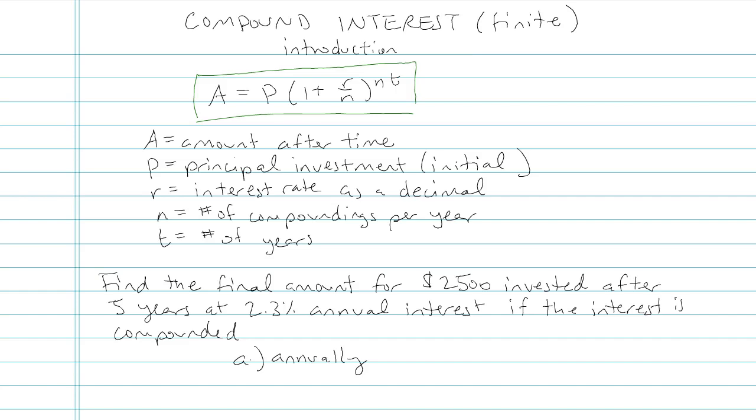On mine, A stands for amount after time, the amount of money in the account after time. Sometimes it's written like this, A parentheses of T equals blah, blah, blah, to show function notation, amount where your input is time. So just a heads up on that. It doesn't mean amount times time.